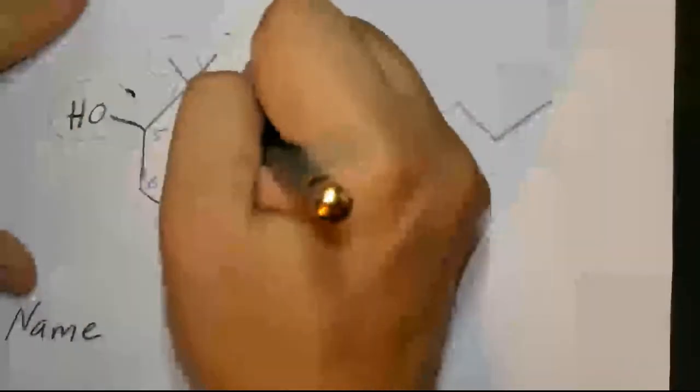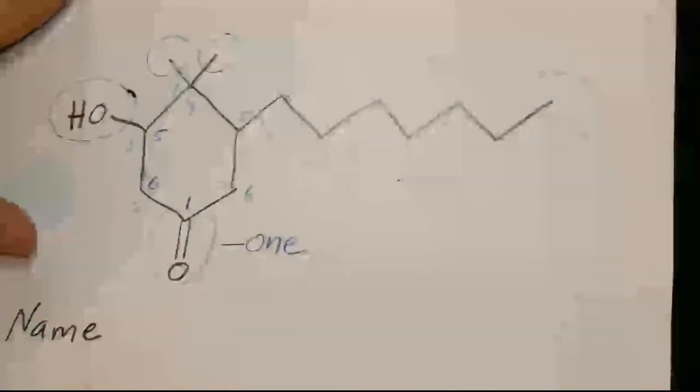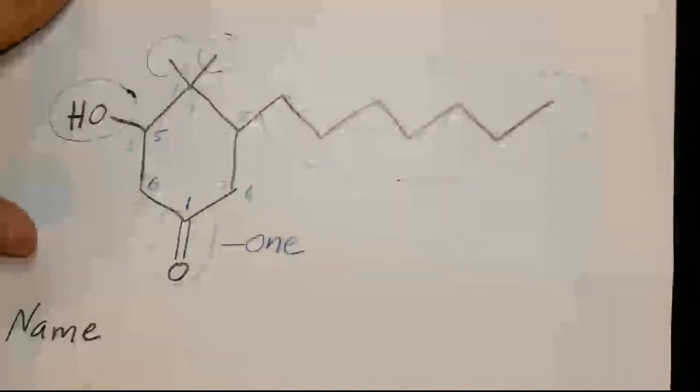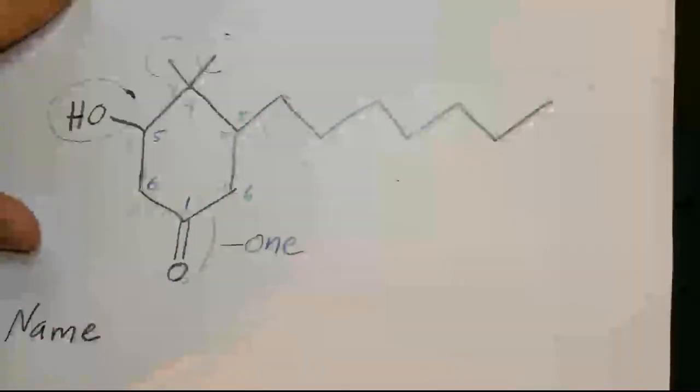Then you still have the choice of which direction to go: one, two, three, four, five, six clockwise, or one, two, three, four, five, six counterclockwise. At this point we don't really look at priority anymore, because that was already the priority functional group.